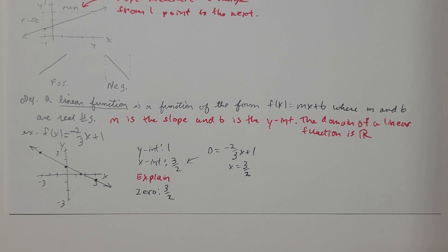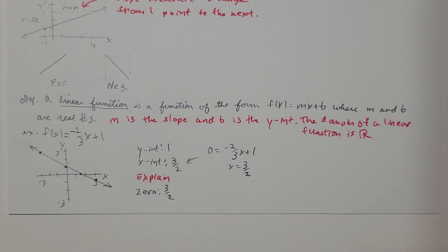A definition: a linear function is a function of the form f(x) equals mx plus b, or y equals mx plus b — y and f(x) are the same thing — where m and b are real numbers. m is the slope and b is the y-intercept.